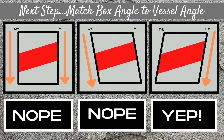One crucial step is making sure that you match the color box angle to the vessel angle. In the first example, the vessel is at an angle but the color box is unsteered — this is incorrect. In the next example, the color box is steered in the opposite direction of the vessel lie — also incorrect. In the third illustration, the color box and the vessel lie are the same, and this is what you want, so that you can determine the true direction of flow.